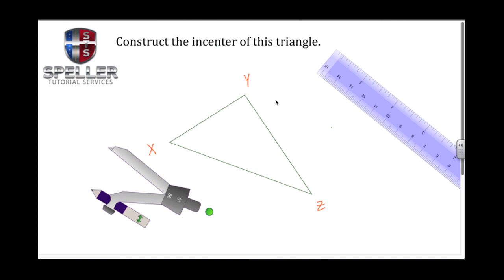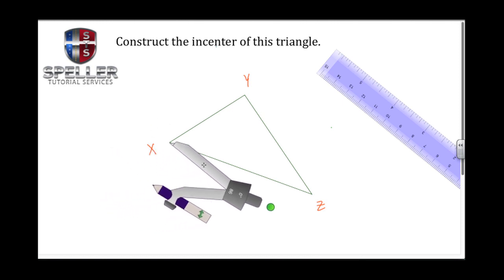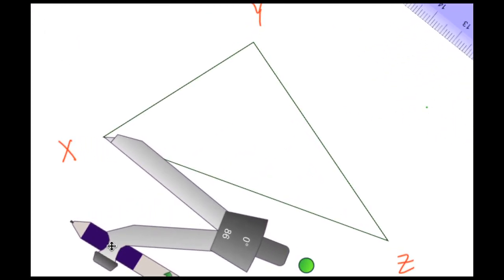We begin this by drawing angle bisectors for each one of these angles, so angle X, Y, and Z will have an angle bisector. From previous videos, we know that an angle bisector is a line that will cut an angle in half.